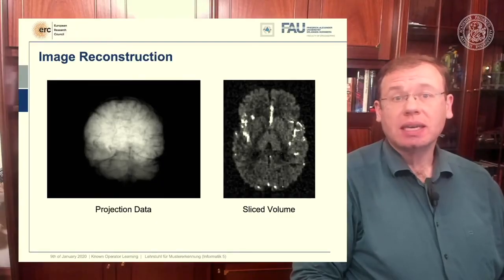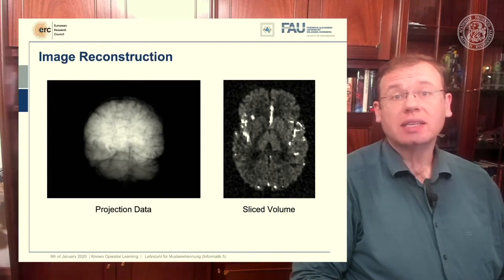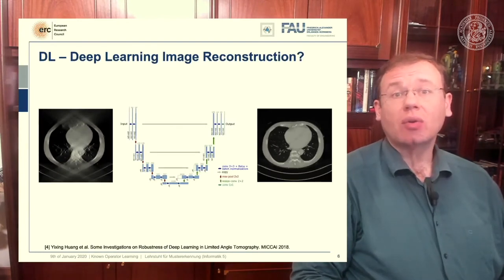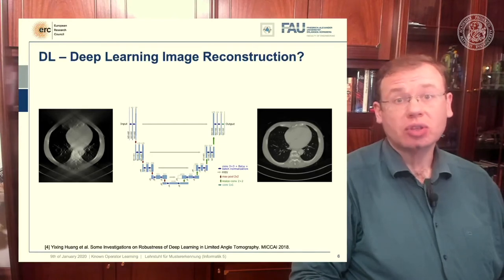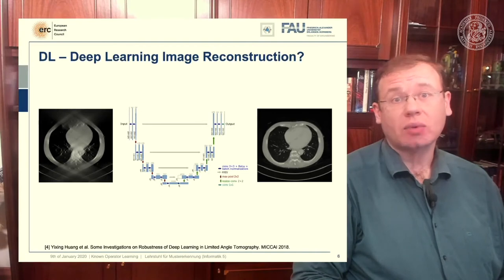The problem is very well researched — we have known solutions to it since 1917 — but there are of course problems with artifacts, image quality, and dynamics which make the problem hard, and therefore we would like to find improved reconstruction methods. One problem is called the limited angle problem: if we only rotate by about 120 degrees instead of a full rotation, you get slice images like shown on the left, which are full of artifacts and you can barely see what is in the image.